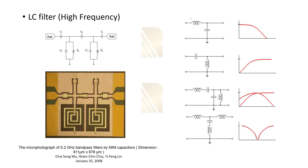Here are some examples of on-chip filters. For instance, you can see an LC filter used for high frequency. In this picture, you can see the micrograph of a 5.2 GHz bandpass filter using MIM capacitors, with dimensions of approximately 800 micrometers by 700 micrometers — very small. An off-chip version of this would be much bigger and consume far more area. This bandpass filter passes 5.2 GHz while rejecting other frequencies. On the right side, you can see different LC filter topologies: low pass, high pass, bandpass, and bandstop.